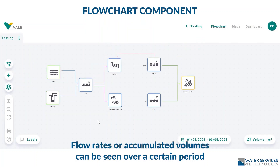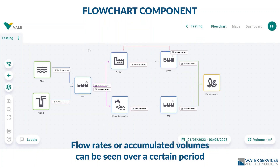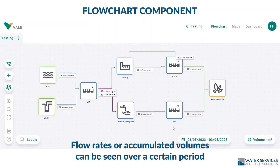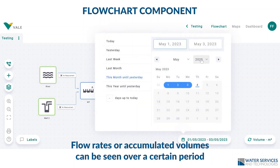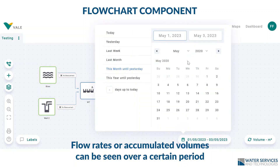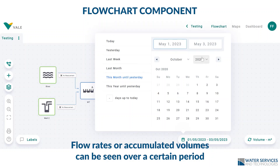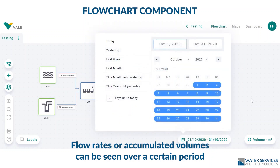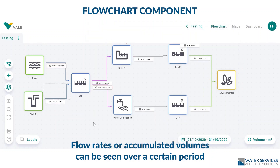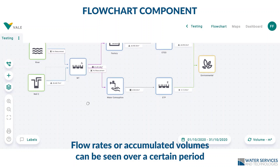Flow lines can also be deleted dynamically. You can, at any time, check the accumulated volume over a certain period of time, or check the flow rates at a given time from all your structures, having complete control over the water from the moment it comes into your operation to the time it leaves.